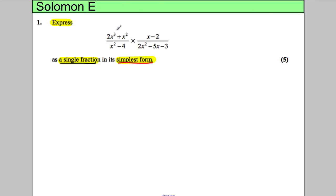The key with these questions is factorizing. I'm going to factorize the numerator and denominator of each part. Let's factorize the top - what's a common factor of 2x³ and x²? Well, x² is, so I'm going to factorize out x² and I'm left with 2x + 1 in the brackets.